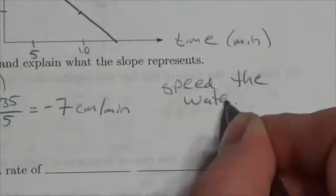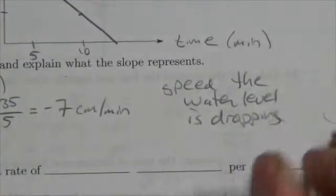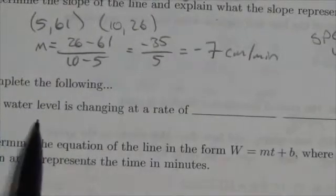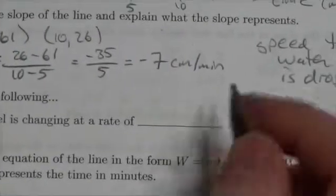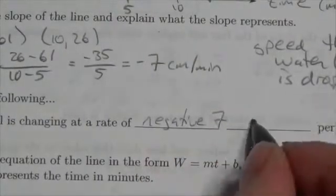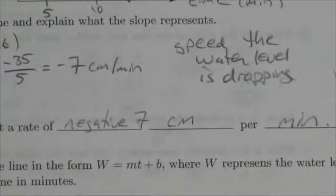So what does that mean? Well, this is the speed the water level is dropping, that's what it represents. Now the next one here, complete the following: the water level is changing at a rate of negative seven centimeters per minute. That's the speed that it's changing at.